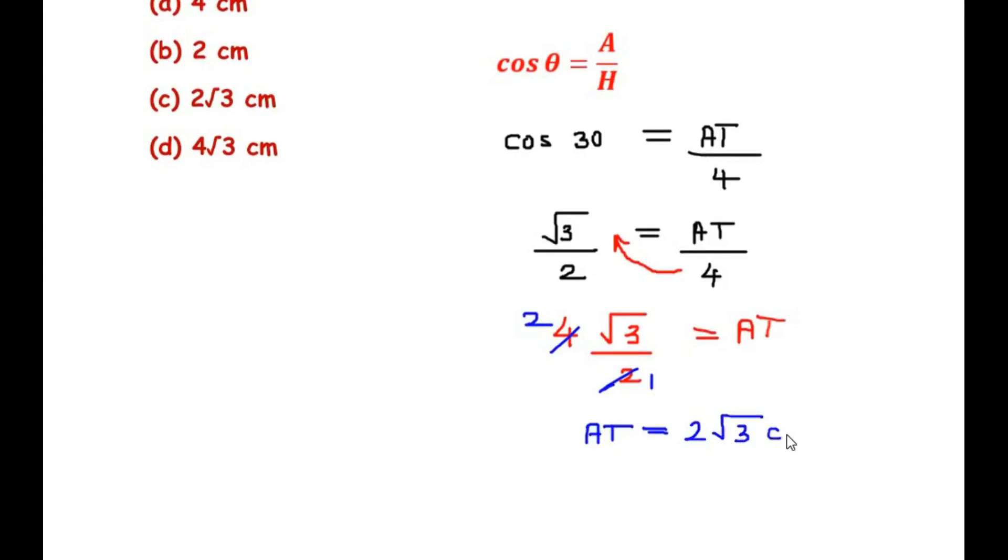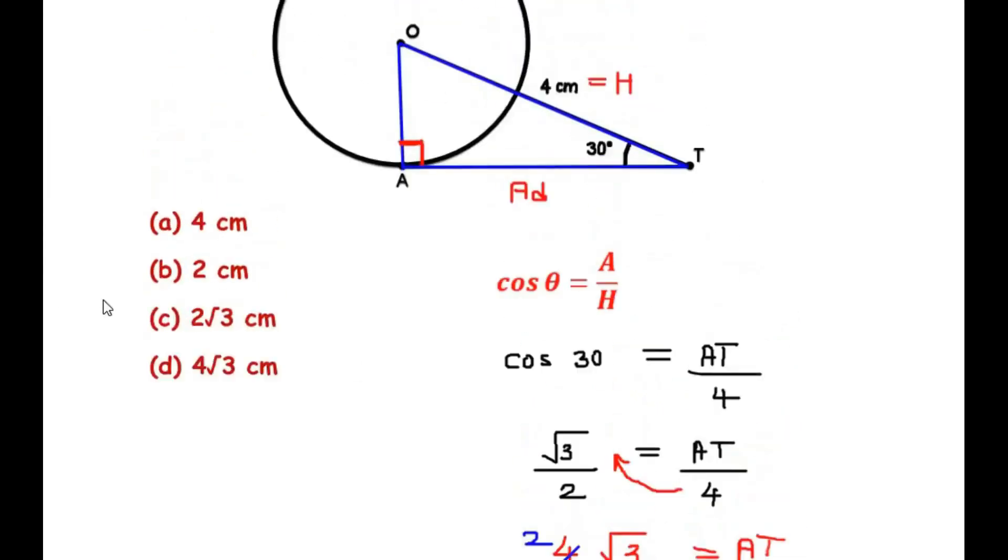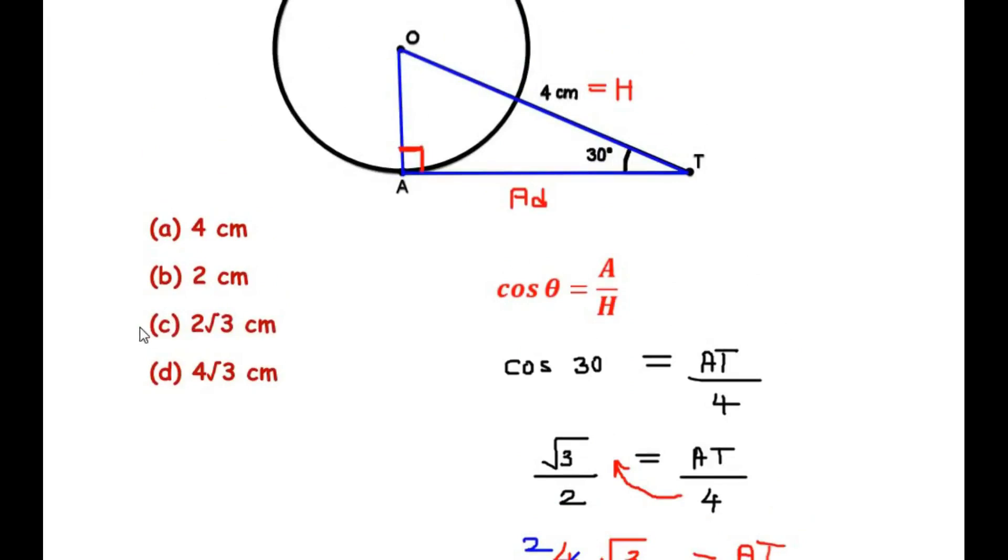So let us see if it is in the options. So here we have option C, that is 2 root 3.